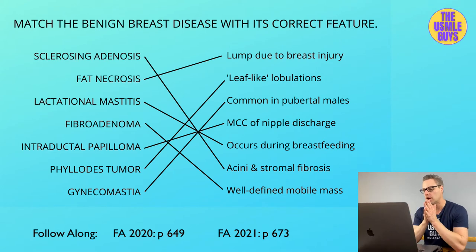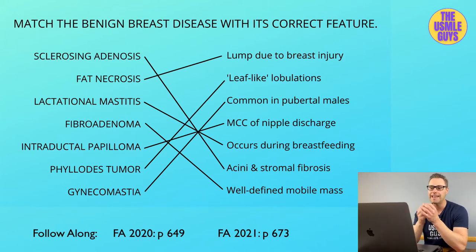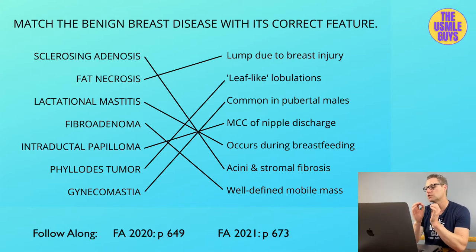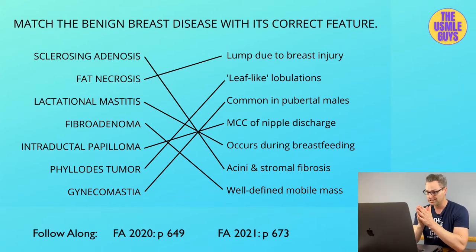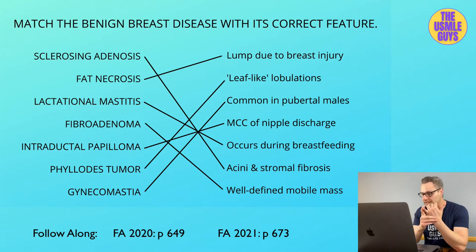Typically, these lesions are nothing more than simple cysts, but they can also be papillary apocrine changes or metaplasia, as well as stromal fibrosis. These aren't typically going to increase one's risk of developing cancer. There are a couple of important subtypes we need to know, including sclerosing adenosis and epithelial hyperplasia.